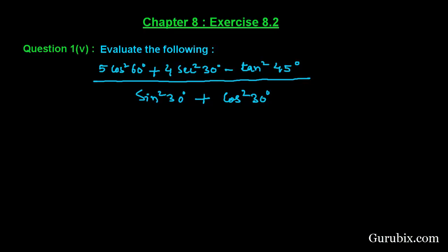we have to evaluate 5 cos²60° + 4 sec²30° - tan²45° over sin²30° + cos²30°. So let us see how to evaluate this value here we have